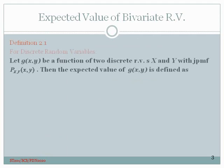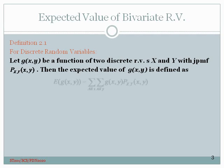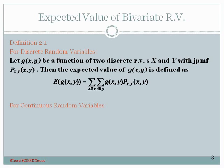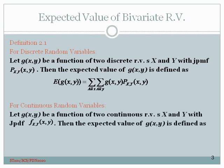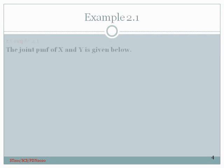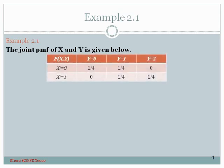Definition 2.1: For discrete random variables, let g(x,y) be a function of two discrete random variables X and Y with joint PMF p(x,y). The expected value of g(x,y) is defined as the sum of g(x,y) times p(x,y) over all x and all y. For the continuous case, we replace the summation by integration: if X and Y are continuous random variables with joint PDF f(x,y), the expected value of g(x,y) is the double integral of g(x,y) times f(x,y) over all x and all y.